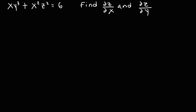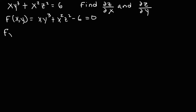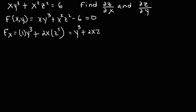Now let's work on another example for practice — feel free to pause the video if you want to try it. We begin by moving the 6 to the other side, so f of x, y is xy cubed plus x squared z squared minus 6, equal to 0. Now let's find the partial derivative with respect to x. The derivative of x is 1, so this gives 1 times y cubed. The derivative of x squared is 2x, treating y cubed and z squared as constants. So f sub x is y cubed plus 2xz squared.